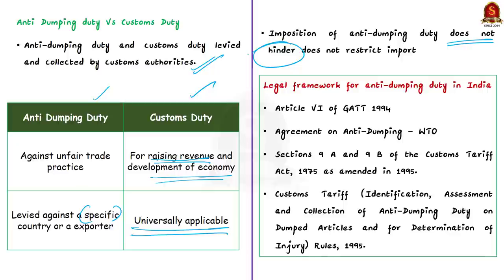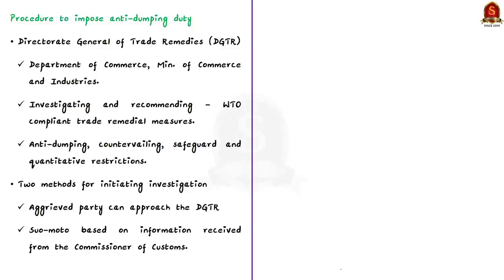Now let us see how anti-dumping duty is applied in India. The legal framework includes Article 6 of GATT 1994, the WTO Agreement on Anti-Dumping, Sections 9A and 9B of the Indian Customs Tariff Act, and the Indian Customs Tariff Rules of 1995. All these deal with anti-dumping duty.